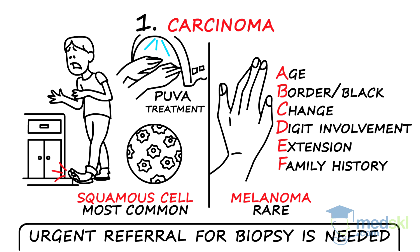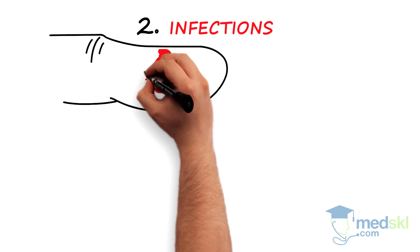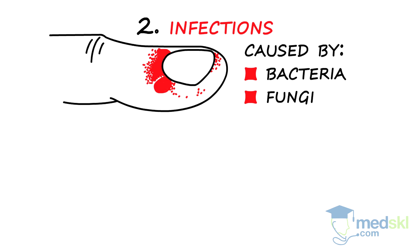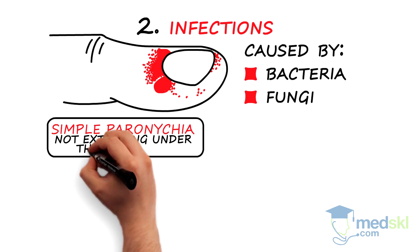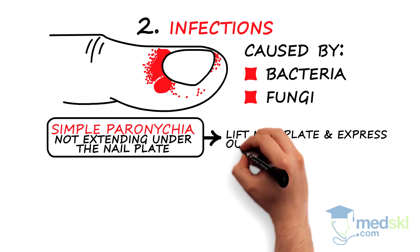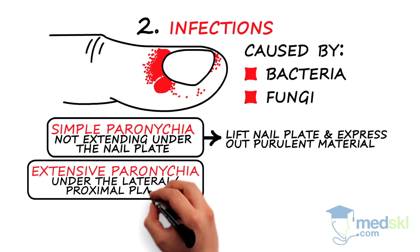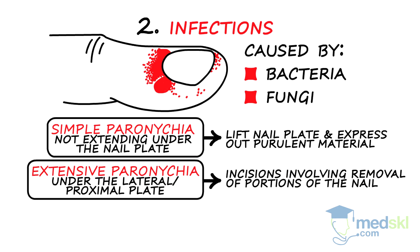Infections. Paronychia is a purulent collection located adjacent to the nail caused by bacteria or fungi. Treatment generally requires drainage. Simple paronychia, meaning not extending under the nail plate, does not require incision of the skin, but simply lifting the nail plate and expressing out the purulent material. Extension under the lateral or proximal nail plate requires more extensive incisions, involving removal of portions of the nail. Chronic paronychia, as seen in immunocompromised patients, requires surgical intervention.